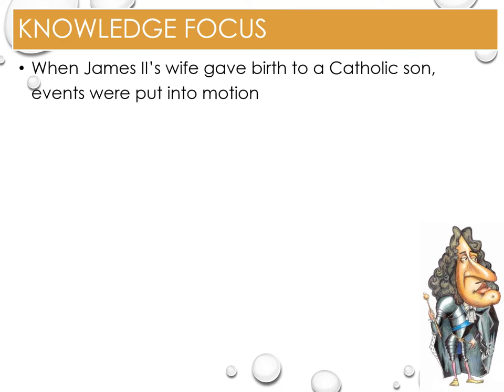The events of 1688 were put into motion when James II's wife, Mary of Medina, gave birth to a son. In most cases, the birth of a son would bring joy and harmony to the nation; however, this son was a Catholic. This had been brewing far longer - in April 1687, James issued a Declaration of Indulgence and attempted to repeal the Test Act, causing backlash from the political nation. When James II attempted a second declaration, seven bishops refused to have it read out, therefore disobeying the king.